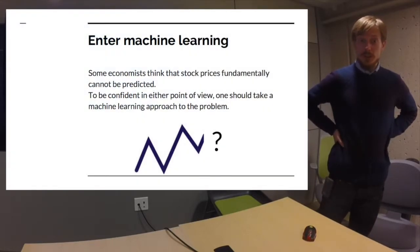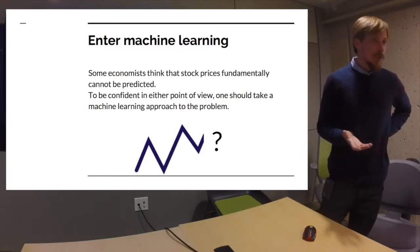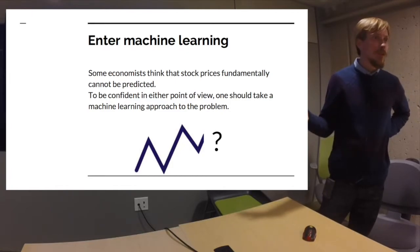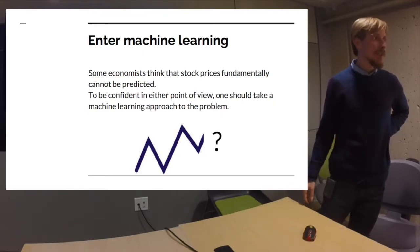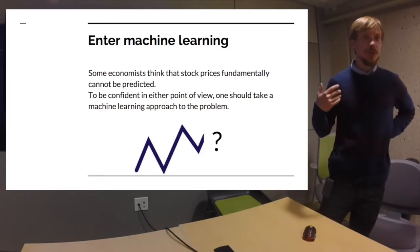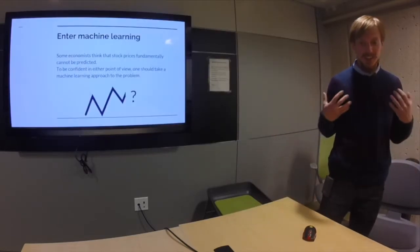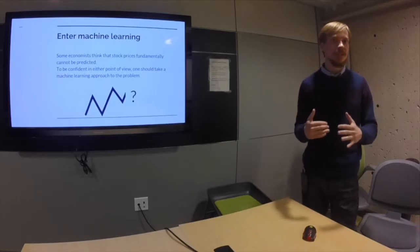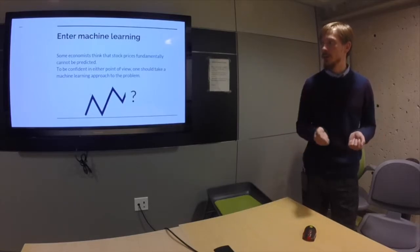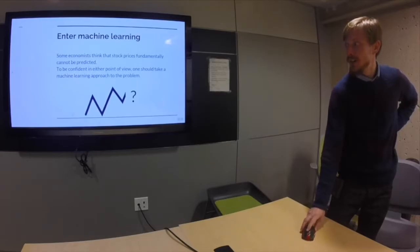Before we start talking about algorithmic trading, there is a very reasonable objection. Quite a lot of economists — professors who publish papers and get Nobel prizes — hold ideas like stock prices fundamentally cannot be predicted. So what does it mean to say something like this, and what does it mean to argue with them and maybe prove them wrong? There are many possible scientific paradigms, but we're going to use the machine learning approach.